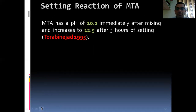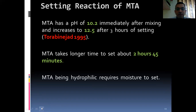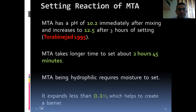MTA has a pH of 10.2 immediately after mixing and increases to 12.5 after 3 hours of setting, according to Torabinejad 1995. MTA takes a longer time to set, about 2 hours and 45 minutes. MTA being hydrophilic requires moisture to set. It expands less than 0.1%, which helps to create a barrier.